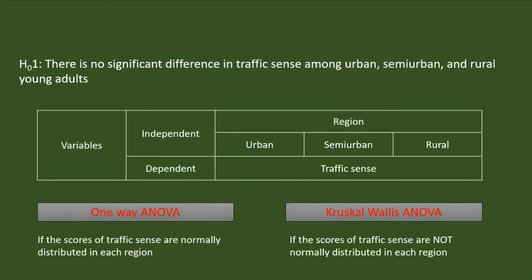Then I planned my hypothesis testing procedures. First, I shall test if there is a significant difference in traffic sense among urban, semi-urban, and rural young adults. Here there are three independent samples — urban, semi-urban, and rural. If the scores of traffic sense are normally distributed, I shall go for one-way ANOVA. Otherwise, I shall use Kruskal-Wallis H test.